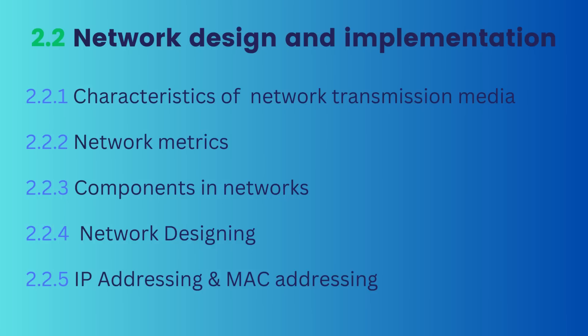In 2.2.3, we study different components in networks such as switch, bridge, gateway, and router — some of these you already use, like routers at home when accessing the internet. There are different components we need to learn: why they are used, how they are used, and at what point we need to use them — such as modems, repeaters, servers, network interface cards, wireless access points, and hubs. Knowing these components will help you in section 2.2.4, where you should be able to produce designs for networks to meet specified requirements.